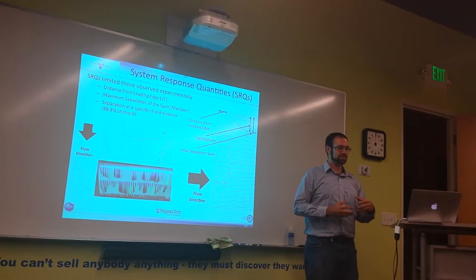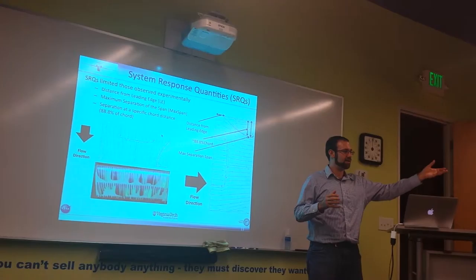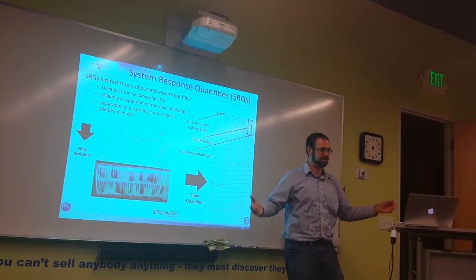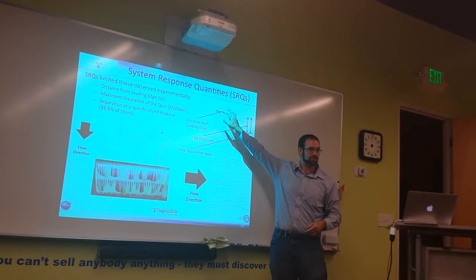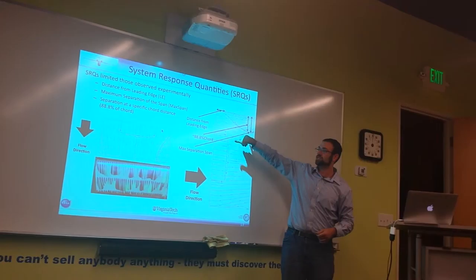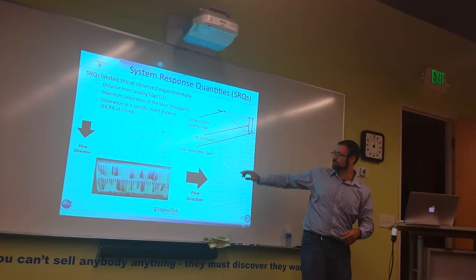System response quantities. These are basically what we're measuring so that we can compare the computational data and the experimental data on the same level playing field. We get four quantities: the distance from the leading edge from which the separation starts, the maximum distance, the distance at a specified chord length, that's distance from the leading edge, and we also just generally see how big this area is in some of those constraints.